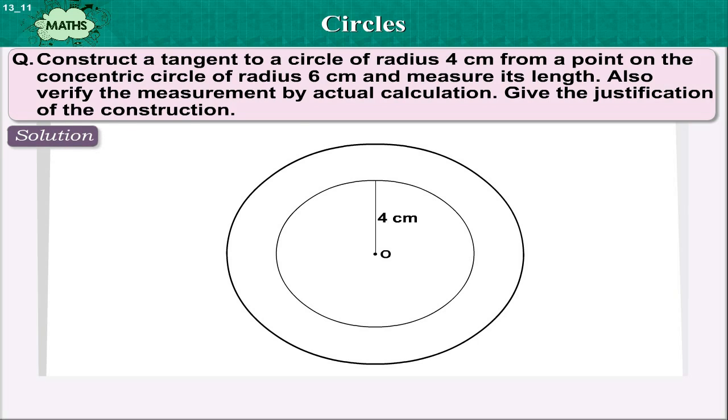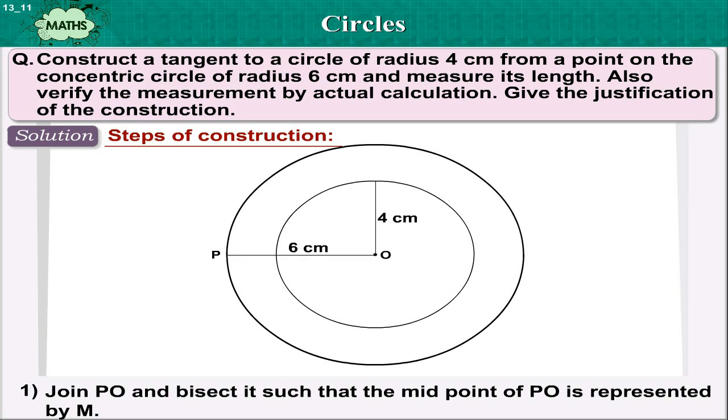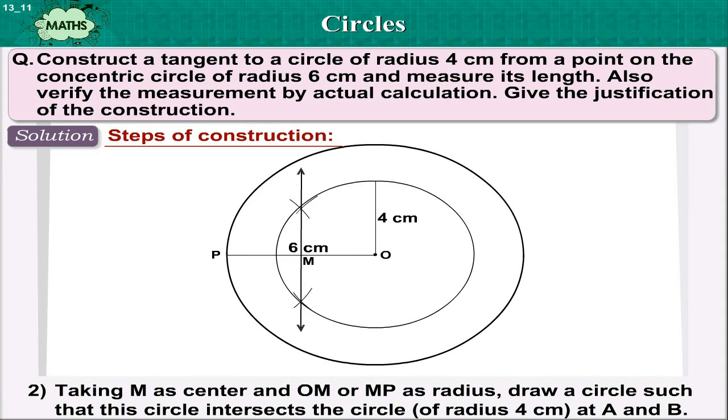Solution. Steps of construction. Step 1: Join PO and bisect it such that the midpoint of PO is represented by M.